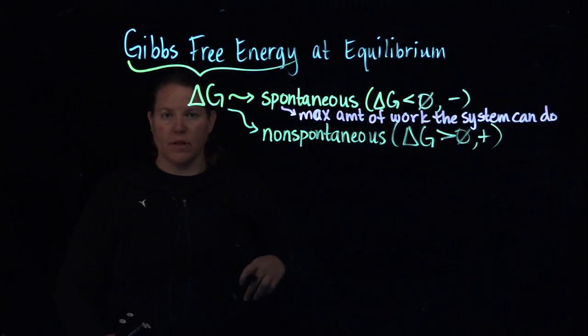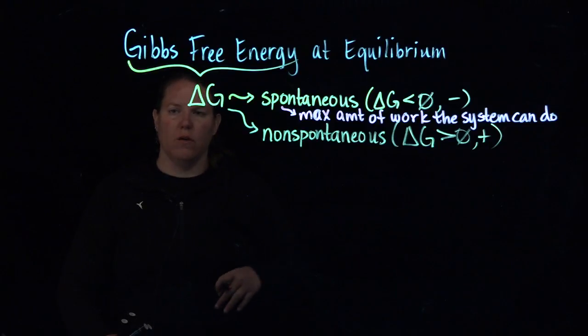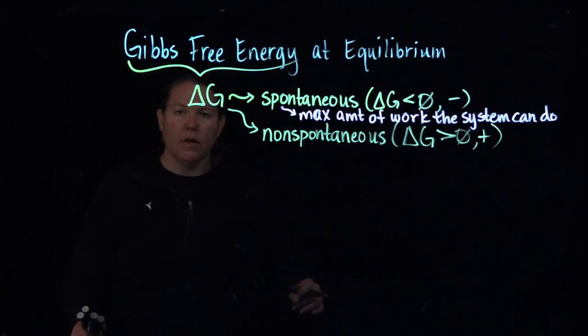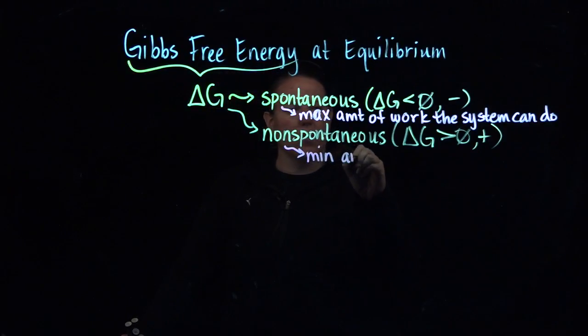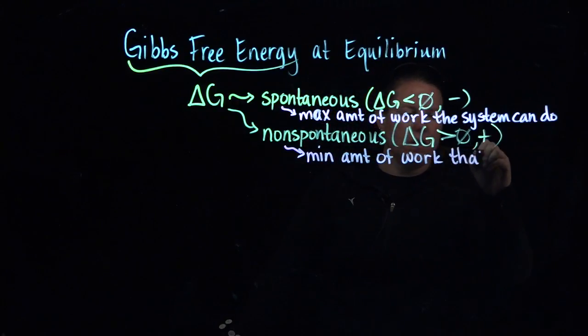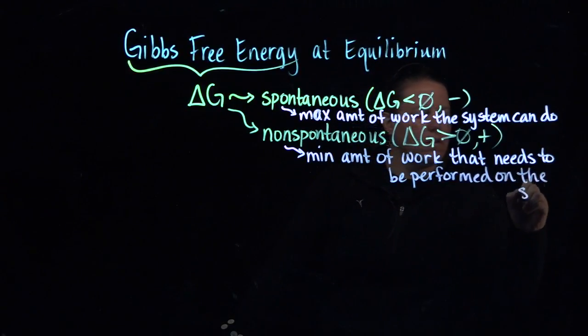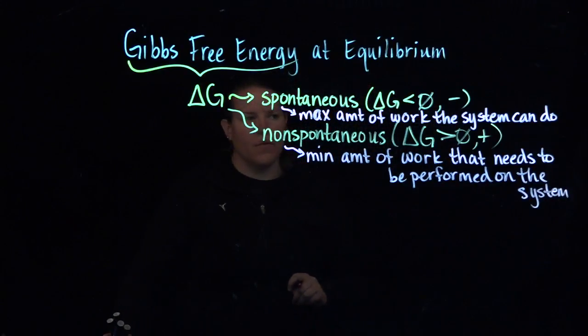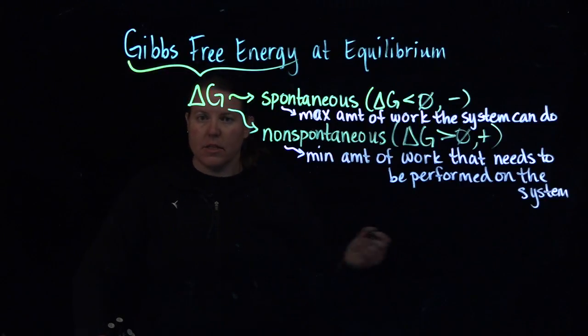And when we're talking about the maximum amount of work a system can do, where we're applying this is in electrochemistry. So we're really talking about batteries and we're talking about how much, how many hours, how long of a time, how much work can that battery do on something else to run it. The non-spontaneous moment here is that this is the minimum amount of work that needs to be done on that system to make it happen. And we know that if we have a reaction that's spontaneous in one direction, let's say it's spontaneous in the forward direction, it is non-spontaneous in the opposite direction.